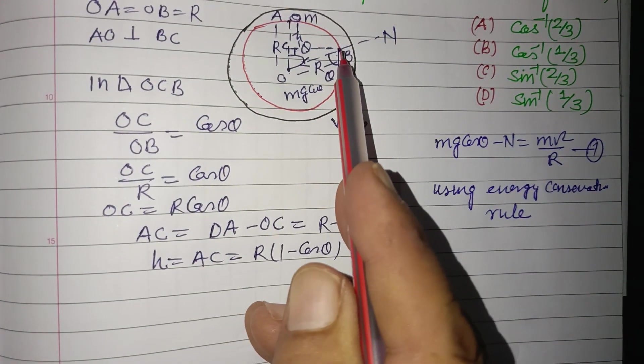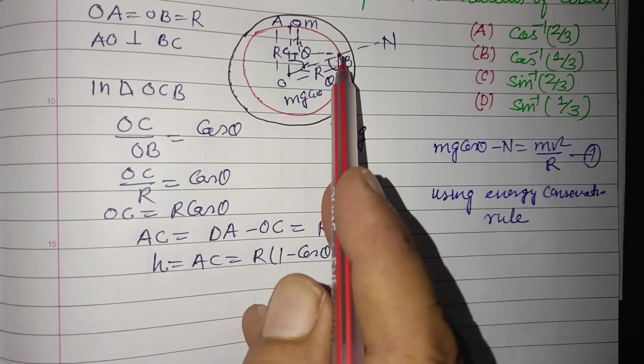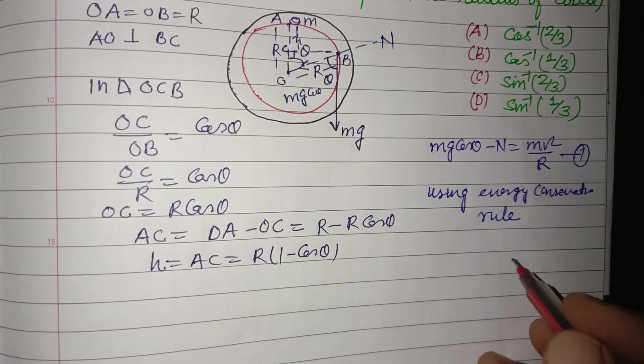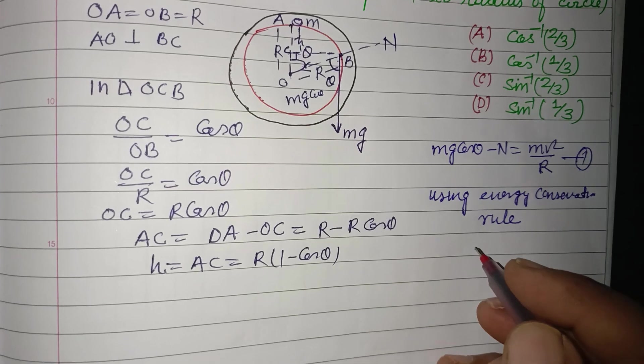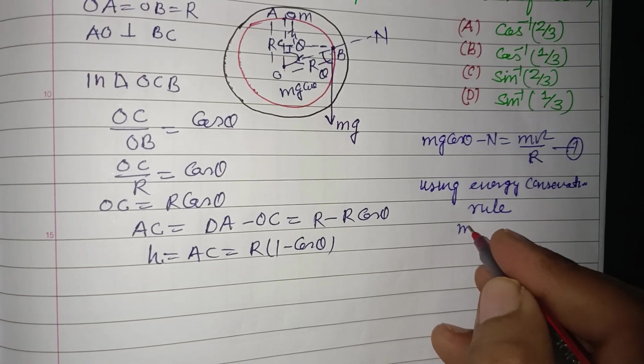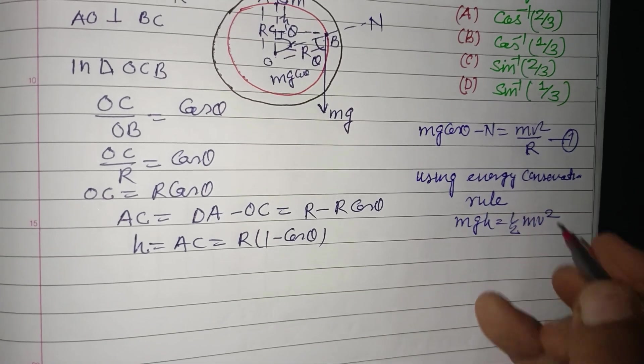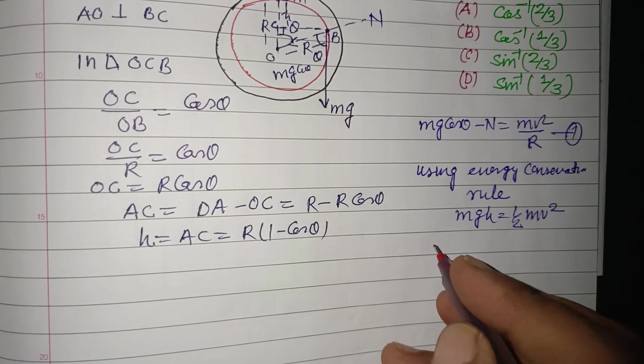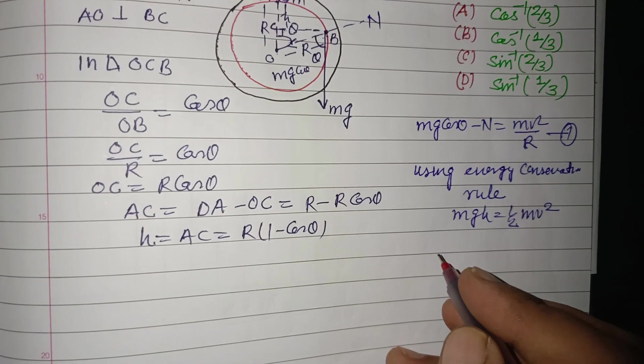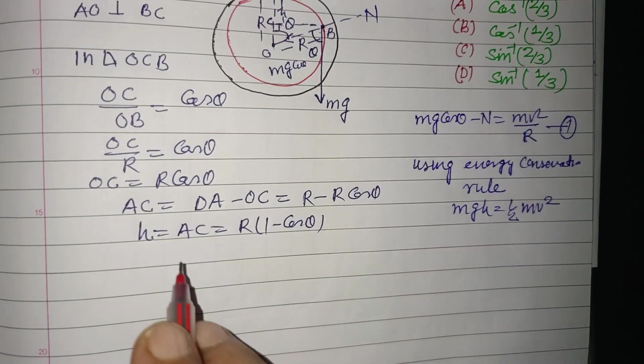The kinetic energy obtained by the particle at B is equal to potential energy dropped. So mgh equals half m v squared.